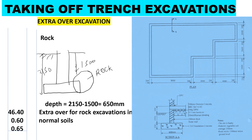We now look at the rock that exists. We've been told rock exists 1500 millimeters below ground level. Our average depth from ground level to the bottom was 2150mm, and at 1500mm below ground level there is rock. We subtract to get the depth of rock: 2150 minus 1500 equals 650mm. We book it as: mini gut 46.40 × 0.60 × 0.65, described as extra over for rock excavation in normal soil.